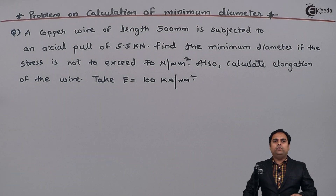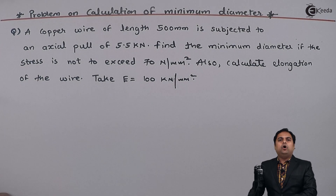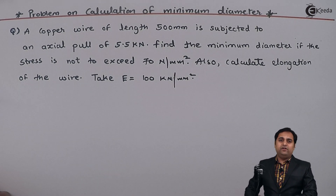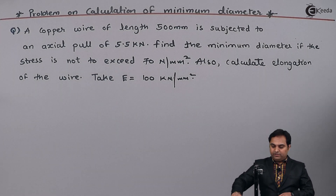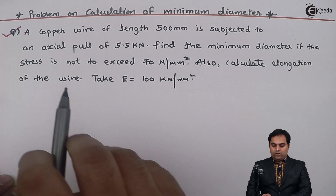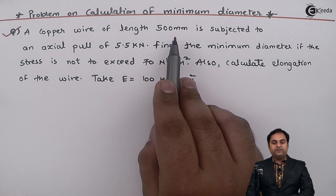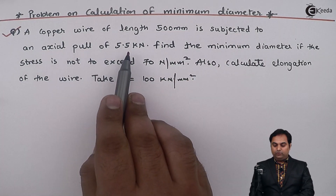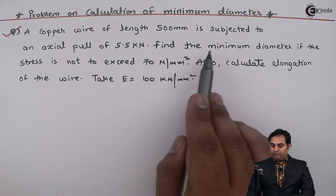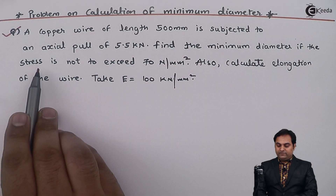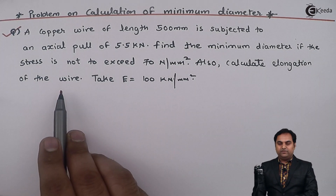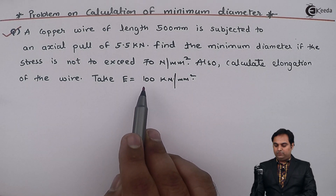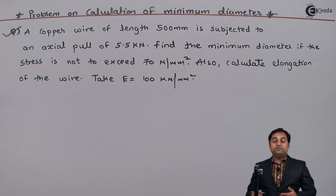In this video we are going to see a problem on calculation of diameter of a wire which is subjected to some kind of loading. A copper wire of length 500 mm is subjected to an axial pull of 5.5 kilo Newton. Find the minimum diameter if the stress is not to exceed 70 Newton per mm square. Also calculate the elongation of the wire. Take E equal to 100 kilo Newton per mm square.